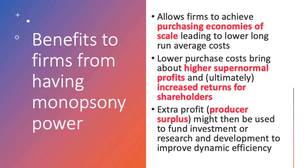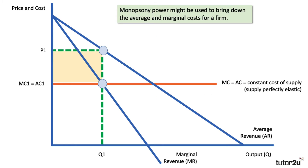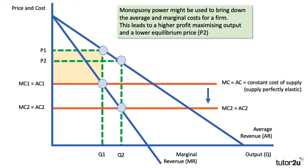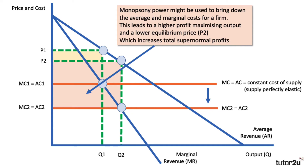That can bring about higher supernormal profits and ultimately increase returns for shareholders. That extra profit — producer surplus — might then be used to fund capital investment or research and development to improve dynamic efficiency. Here's a strong analysis diagram: the initial profit-maximising output is Q1 with price P1. Bargaining power with suppliers helps bring down unit costs from MC to MC2 and AC2, so equilibrium output expands to Q2 and price falls from P1 to P2, increasing total supernormal profit.